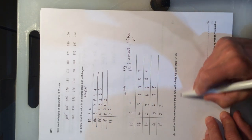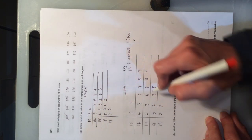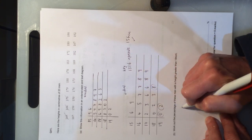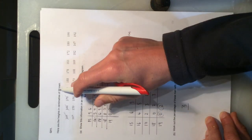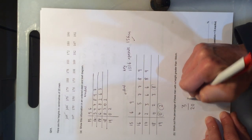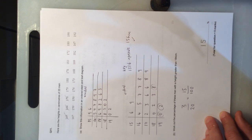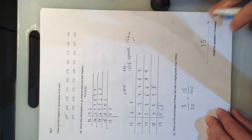We're asked to work out the percentage of these men with a height greater than 184. Greater than 184 is this one, this one, and this one. In other words, 3 out of the 20. Non-calculator, so 3 out of 20 is the same as 15 out of 100, and therefore it's the same as 15%.